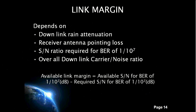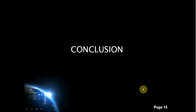Link margin depends upon the downlink rain attenuation, receiver antenna pointing loss, the signal-to-noise ratio required for a bit error rate of 1 over 10 to the power of 7, and the overall downlink carrier-to-noise ratio. The ideal situation is to have the earth station and satellite antennas aligned for maximum gain; two possible sources of off-axis loss are the satellite and the earth station. Link margin is the ratio of the available to the required signal-to-noise ratio for a bit error rate of 1 over 10 to the power of 7. There are many software tools available for satellite link budget calculations, and since the cost of satellite operation is quite high with a limited lifespan, only after careful calculation of the link budget can an investor commit to the program. The calculations are helpful in determining the profit and efficiency of the satellite. Thank you.